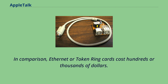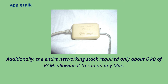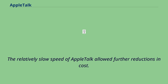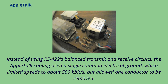Additionally, the entire networking stack required only about 6 kilobytes of RAM, allowing it to run on any Mac. The relatively slow speed of AppleTalk allowed further reductions in cost. Instead of using RS-422's balanced transmit and receive circuits, the AppleTalk cabling used a single common electrical ground, which limited speeds to about 500 kilobits per second but allowed one conductor to be removed, meaning that common three-conductor cables could be used for wiring.